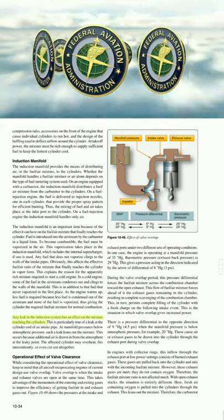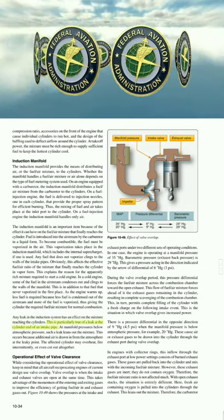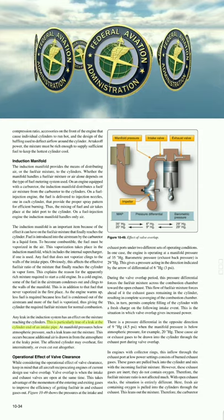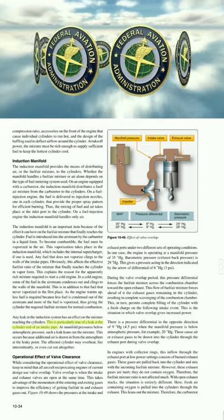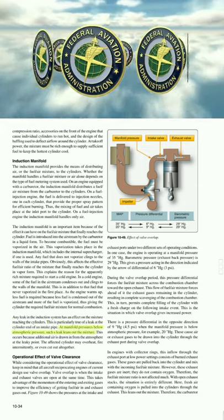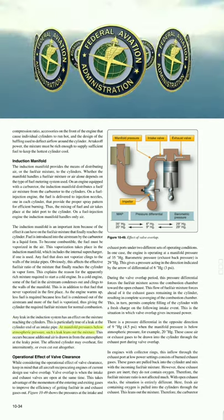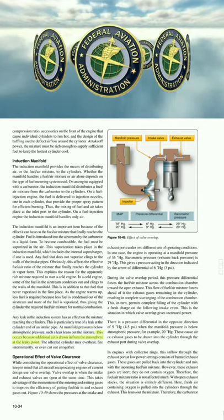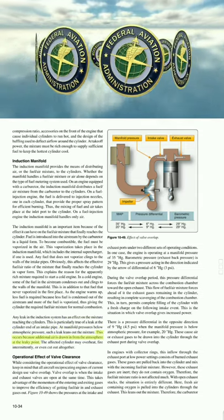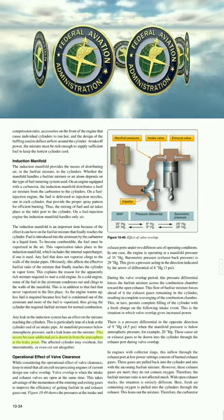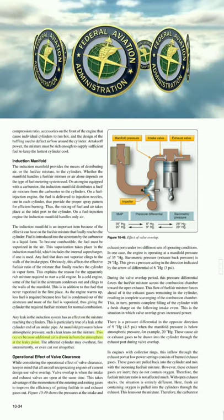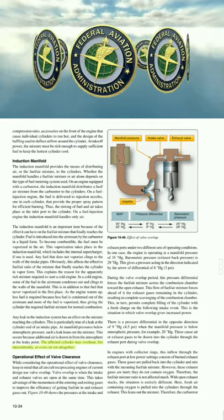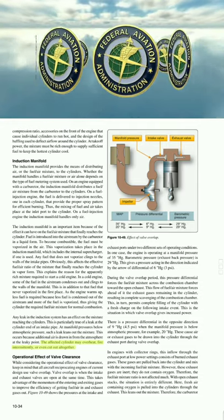Any leak in the induction system affects the mixture reaching the cylinders. This is particularly true of a leak at the cylinder end of an intake pipe. At manifold pressures below atmospheric pressure, such a leak leans out the mixture because additional air is drawn in from the atmosphere at the leaky point. The affected cylinder may overheat, fire intermittently, or cut out altogether.